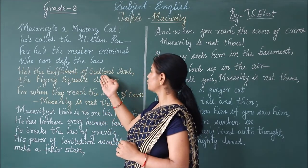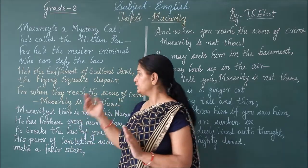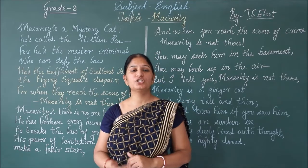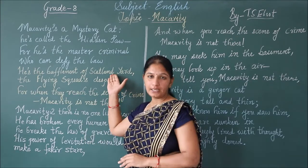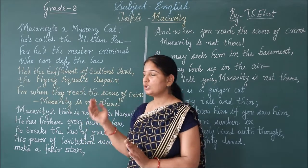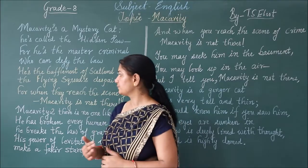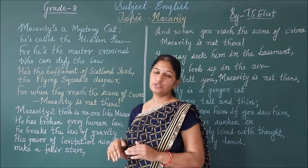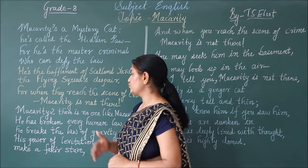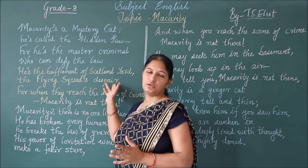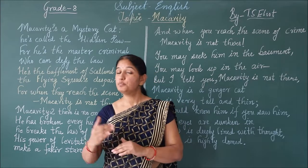He is the bafflement of Scotland Yard. Bafflement means confusion, and Scotland Yard is a detective agency of Britain. For that detective agency, McCavity is a confusion — even this detective agency cannot find McCavity when he commits crimes. The Flying Squad's despair: similarly, the Flying Squad is also a British detective agency, and for them also it is a despair — they are in confusion trying to find out the crimes committed by the mystery cat McCavity.